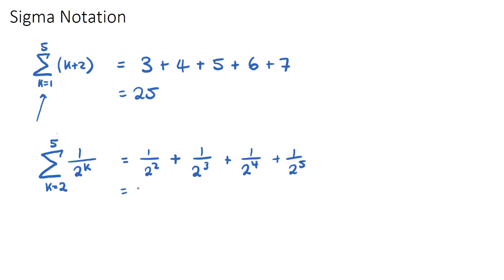Now we can work this out. This is 1 on 4, plus 1 on 8, plus 1 on 2 to the 4 is 16, plus 1 on 32. And I think you get the message here. We could all get a common denominator. I will do it. This is still going to be 1 on 32. Our common denominator here will be 32.